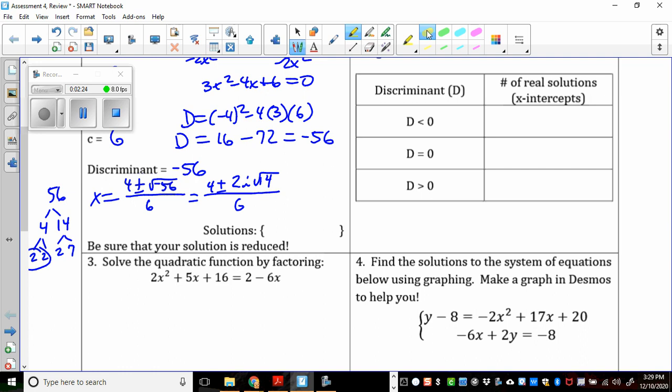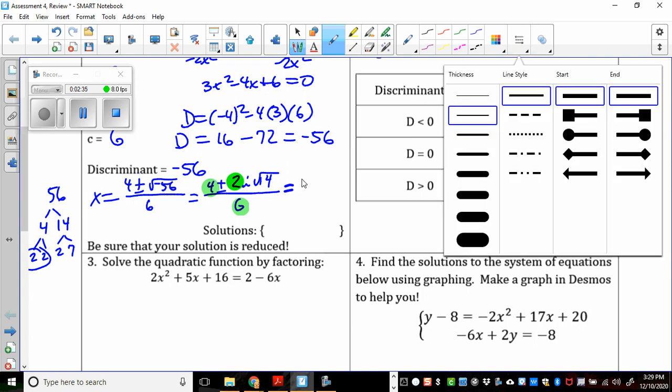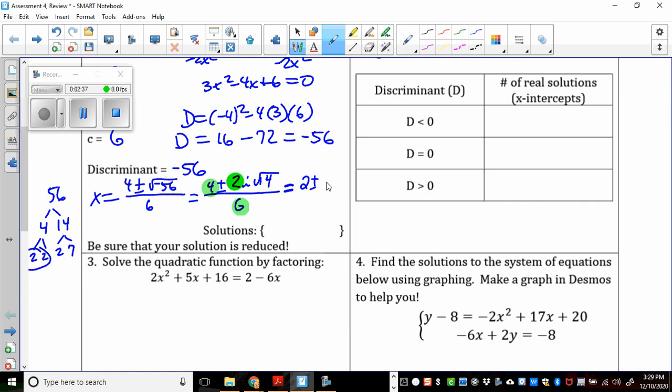Now, remember that if all three numbers here, this one, this one, and this one, all divide by something, if they all simplify, you should do that. So when I do that, I get, they all divide by 2, so I get 2 plus or minus 1i. So I'll just put i, radical 14, all over 3. And there's my solution right there.